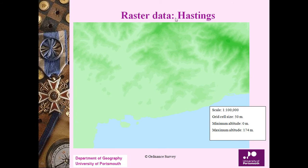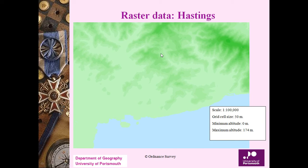Raster data has a scale, a grid cell size, a maximum altitude, and a minimum altitude — this is how information can be retrieved. If you remove the grid lines you won't be able to appreciate what the image shows; for a layman it would just look like a distorted image.